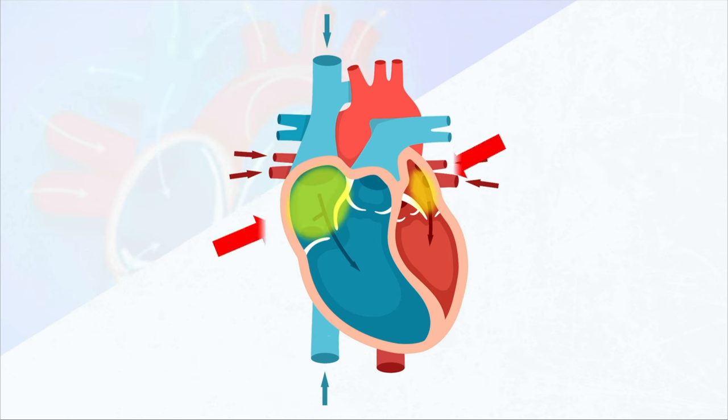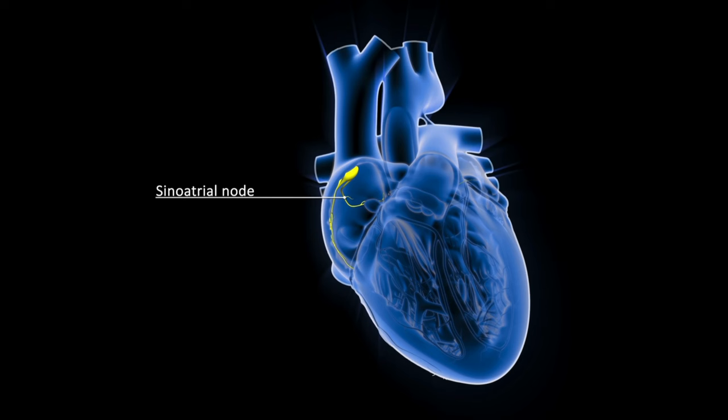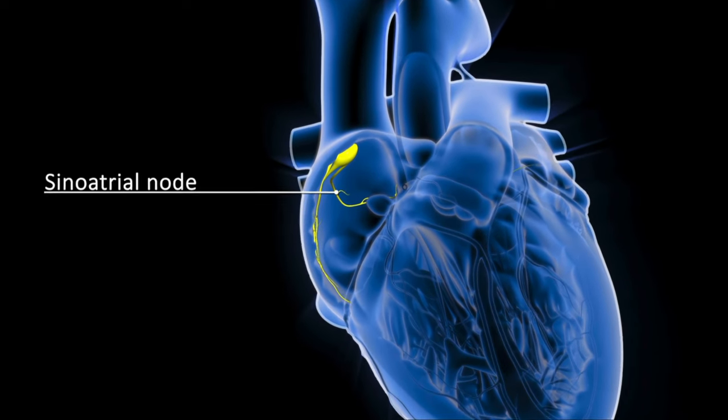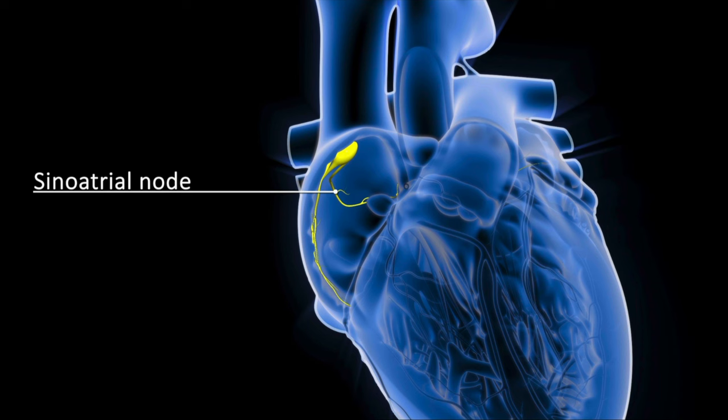The question is: what needs to happen in order for the atria to contract? Well, contraction doesn't just happen on its own. We need some kind of signal to cause it to happen. And fortunately, we have such a signal coming from the pacemaker that's in the heart. In the right atria, that's where we find the pacemaker, a.k.a. the SA node, which stands for sinoatrial node.